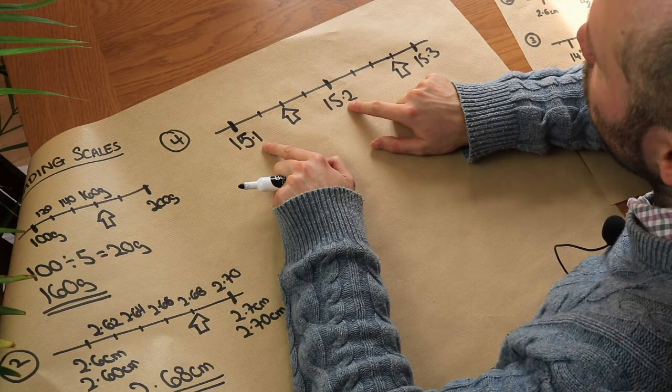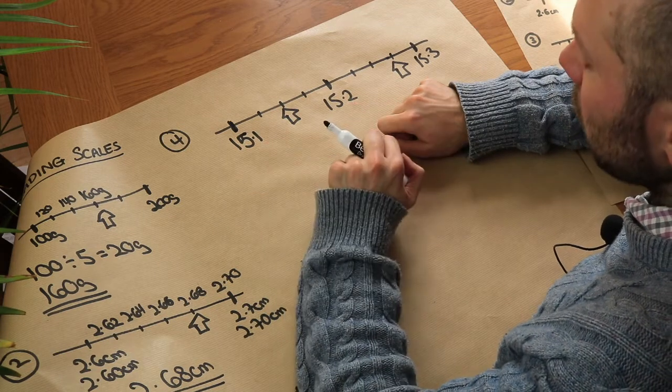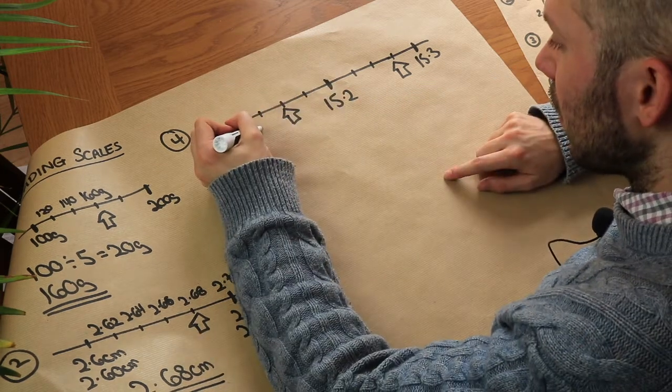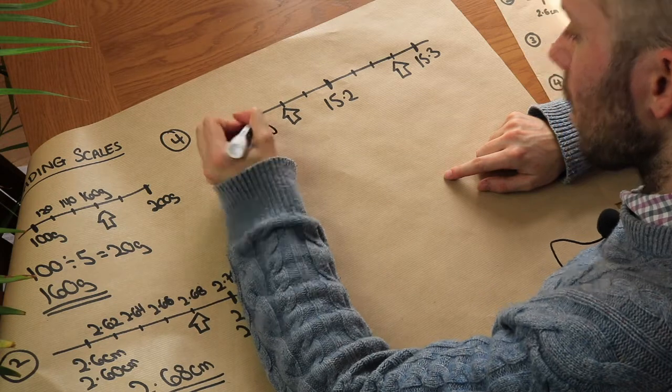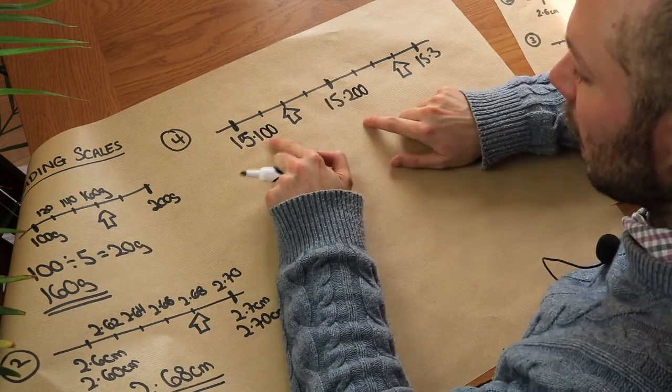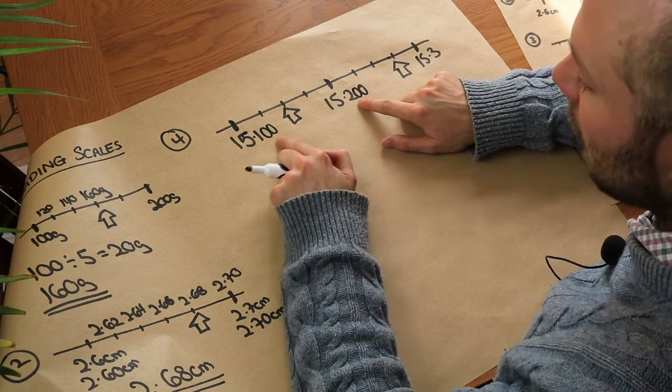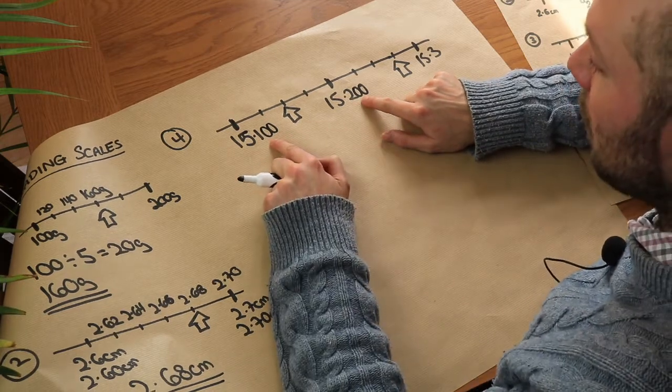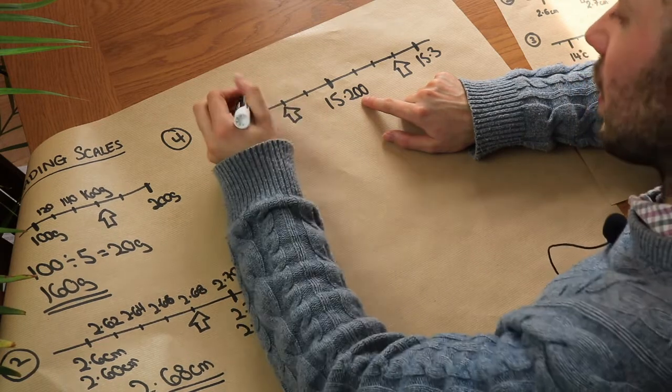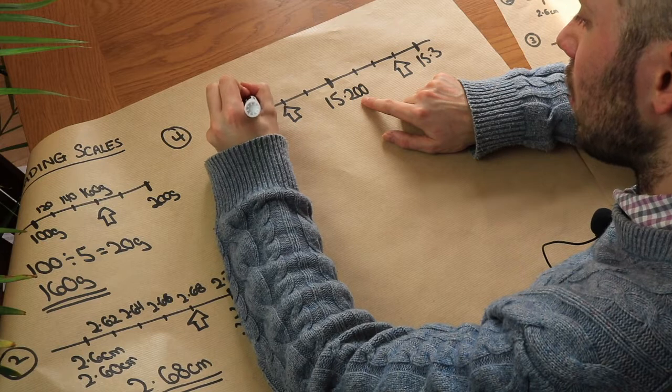Now it might be helpful again if we just put some zeros on the end. Then we can see well that is 100 there after decimal point, that is 200. And if you divide that difference of 100 up into fours, that's going to be 25 each time, isn't it? So that's going to be 15.125.